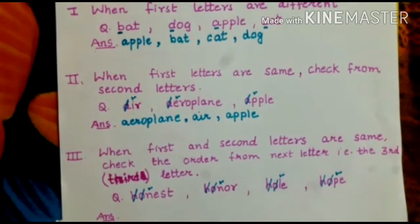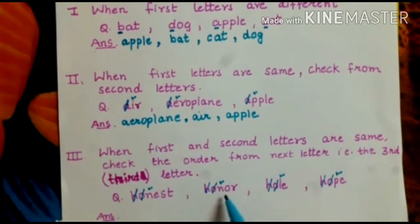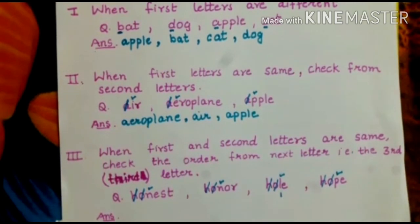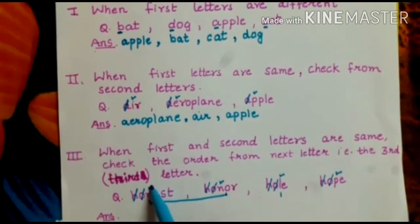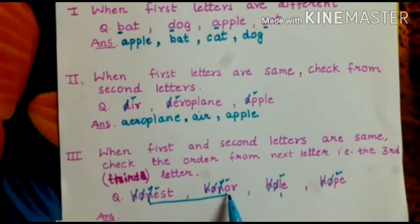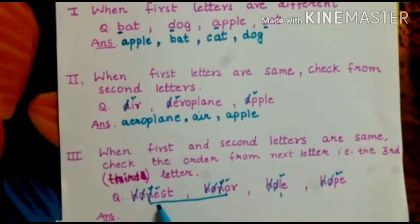Then we check from the third letter. What will come first — N, L, or P? L comes first, so whole is first. After L, what comes? Two words have N as the third letter — honest and honor — so they are the same again. We cancel the third letter and check from the fourth. Out of E and O, E comes before O, so honest comes before honor.